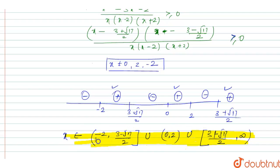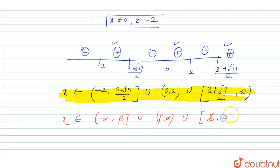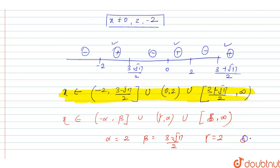Comparing with the given form x ∈ (-α, β] ∪ (γ, α) ∪ [δ, ∞), we identify: α = 2, β = (3-√17)/2, γ = 0, and δ = (3+√17)/2.